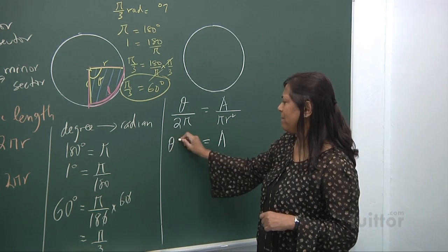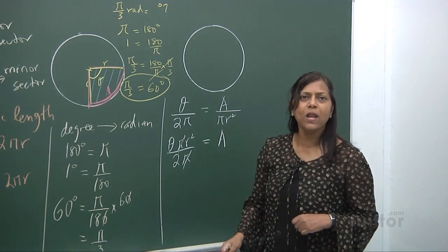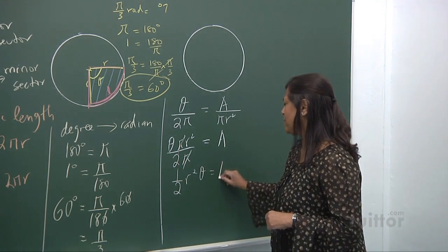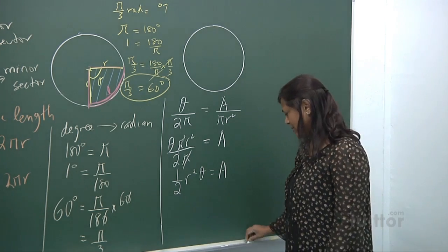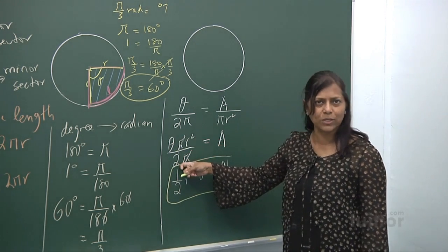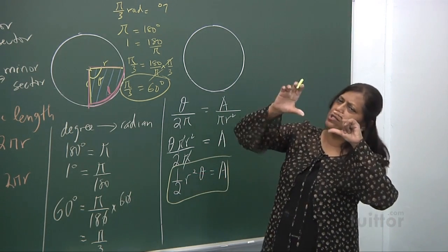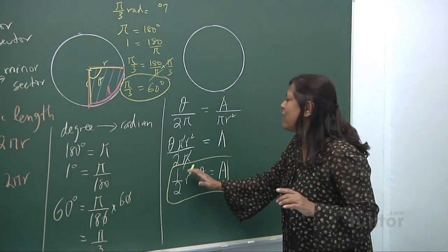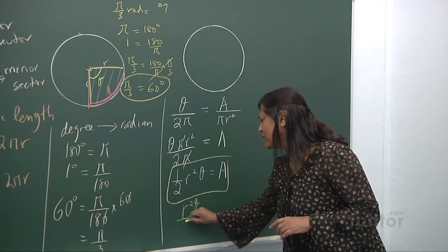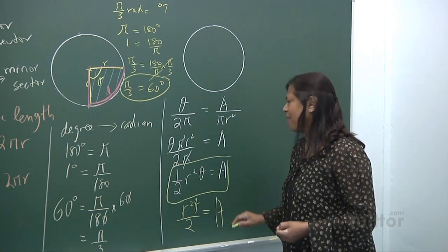Theta over 2π — that's the proportion of the angle — equals the area of that sector over the area of the whole circle, which is πR². So the area of the sector equals theta over 2π times πR². The π and π cancel with the 2π, leaving 1 over 2, so you get half R squared theta as your area. You can write it as R²θ over 2.